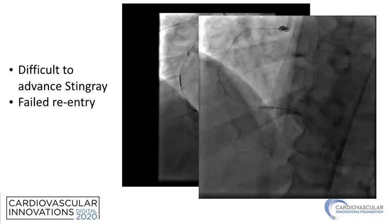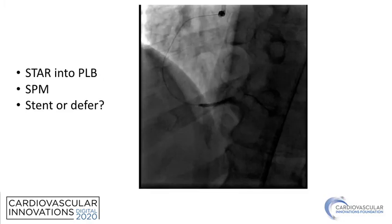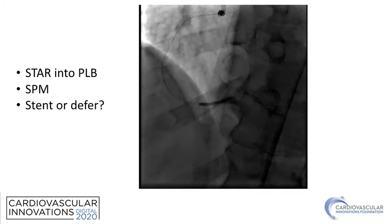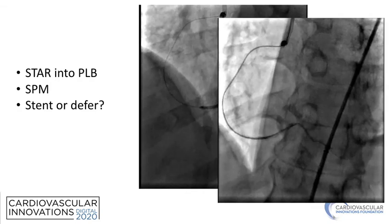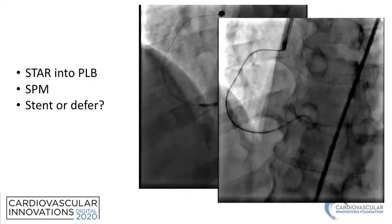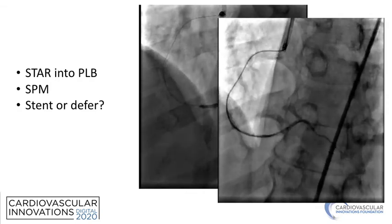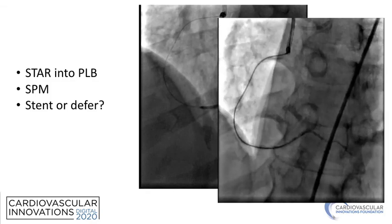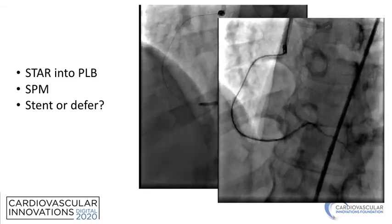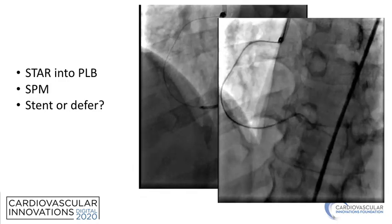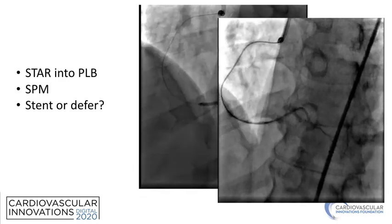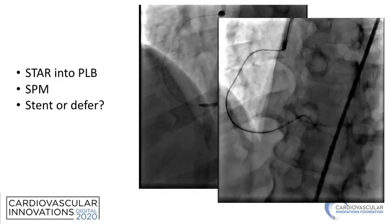We were able to get a knuckle into the posterolateral branch and dilated the whole vessel from there all the way back. However, we had relatively poor flow at the end. Note there is true lumen at the very distal end, but flow is poor with only one vessel runoff. So rather than stenting this, we elected to stop and brought the patient back two months later.